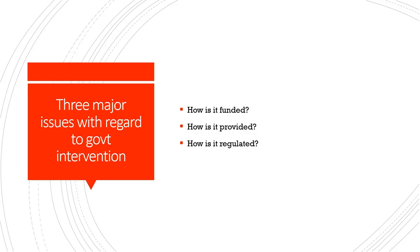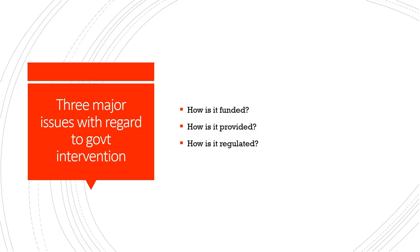There are three major issues when we want to understand any policy framework, be it education or health, particularly in the context of government interventions in the social sector. The three major questions are: how is it funded, how is it provided, and how is it regulated. There are no easy answers to these questions. In this class, we will understand the basic dimensions surrounding funding, provision, and regulation, particularly in India's context.